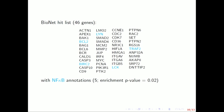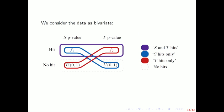We're going to consider the data as, well, it's bivariate. So there you go. We have two dimensions, S and T, and then we're interested in whether the gene is a hit in either dimension. It could be that you have a low p-value in both dimensions.